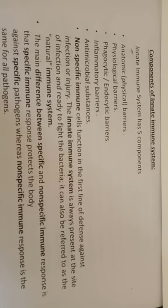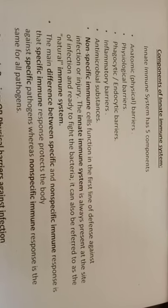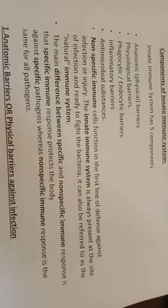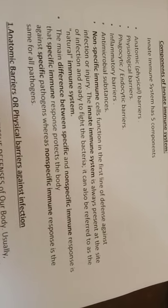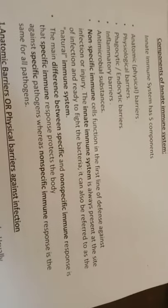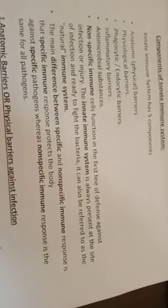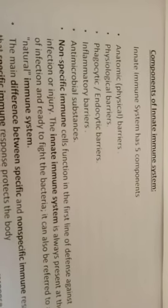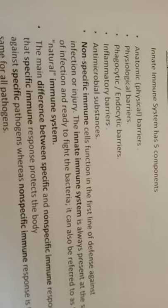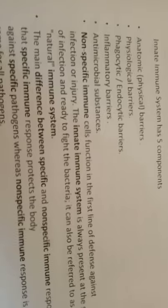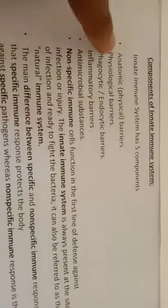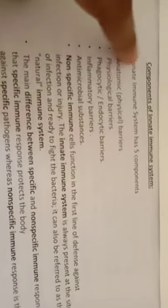The innate immune system has five components: anatomical or physical barrier, physiological barrier, phagocytic or endocytic barrier, inflammatory barrier, and antimicrobial substance. In this video, we will explain these same five components.